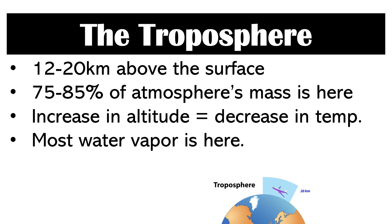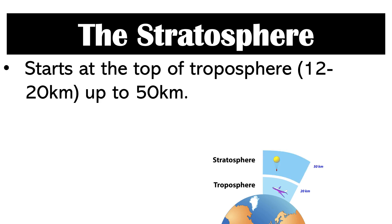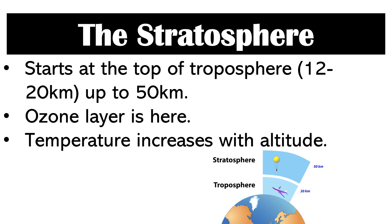Most water vapor is also found in the troposphere. Above the troposphere, you will find the stratosphere. It reaches up to 50 kilometers above the surface, and it is here where you will find the ozone layer. Most of the absorption of UV rays from the sun happens here, and this explains why temperature tends to increase in this layer as altitude increases.